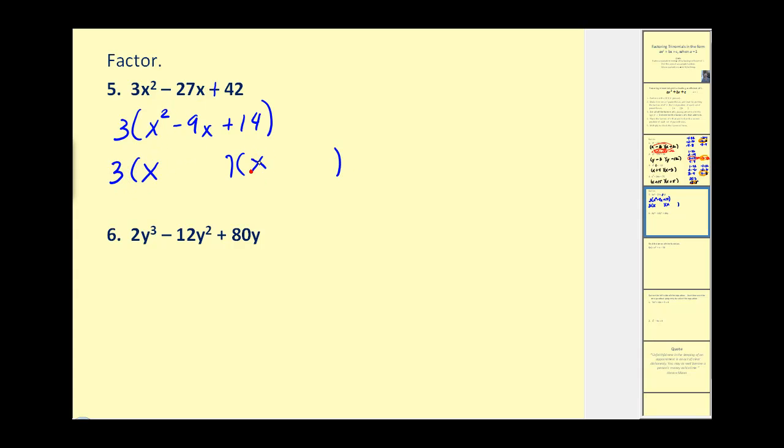We still have our factors of x². And then we want to find the factors of 14 that add to negative 9. Well, instead of listing all of them, we really have two choices. We want a positive 7 times a positive 2, or a negative 7 times a negative 2. Which of these would give us the correct sum? We need to have a negative sum. Therefore, we are going to take the two negative factors. Therefore, this would factor into 3(x - 7)(x - 2). The same thing on number 6.